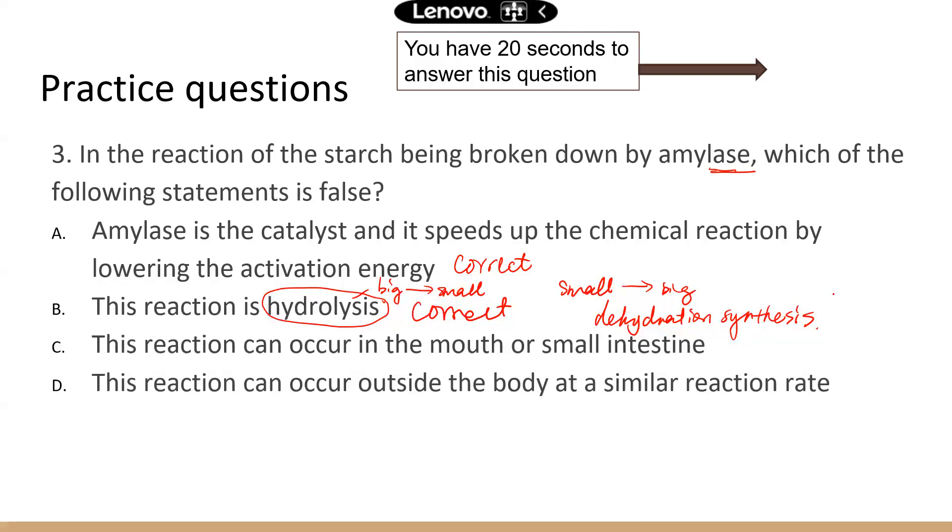What about C? This reaction can occur in the mouth or small intestine. That's correct. Starch digestion can occur both in the mouth or in the small intestine.